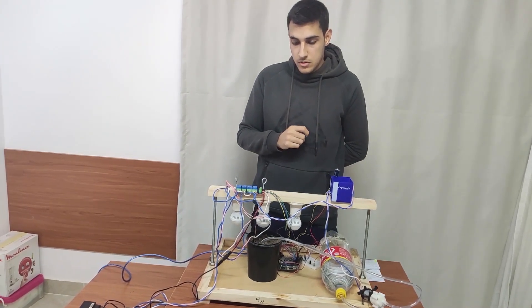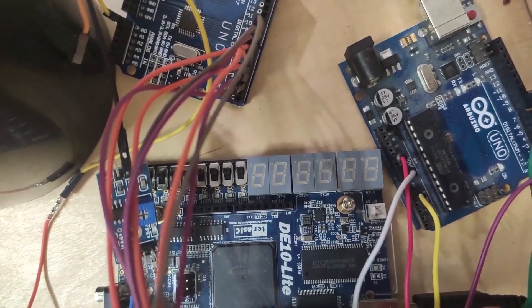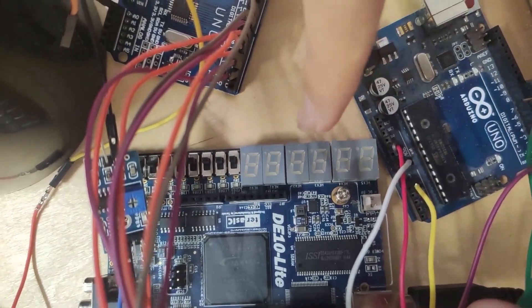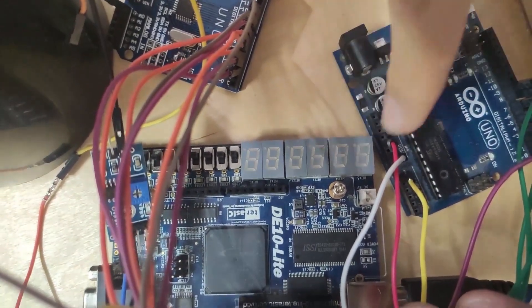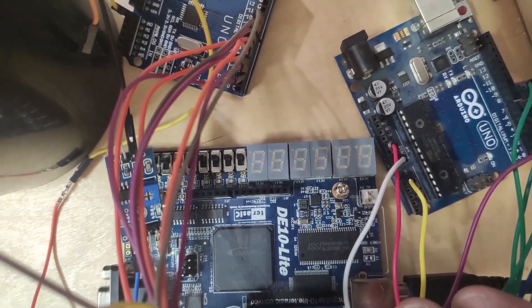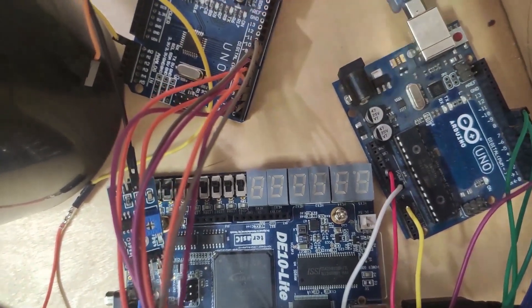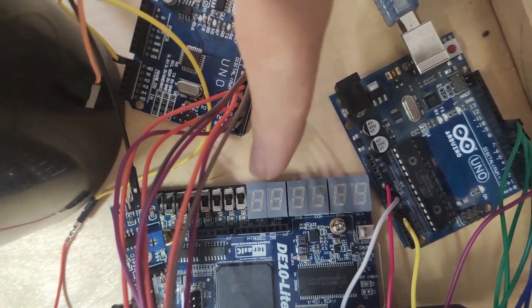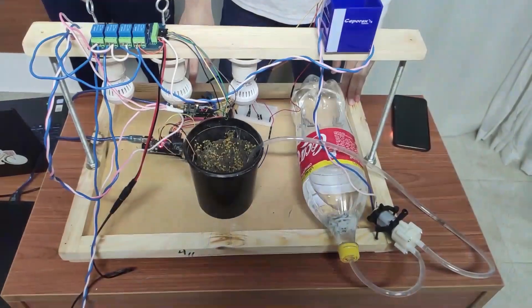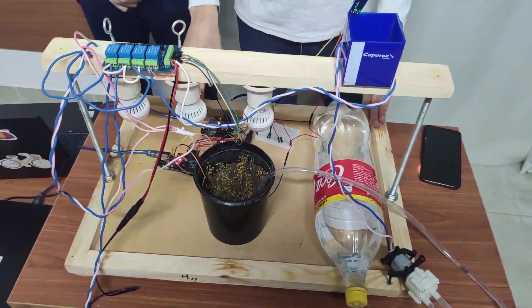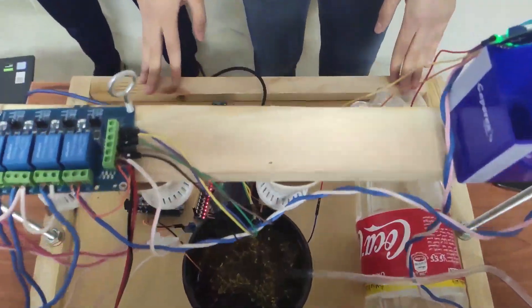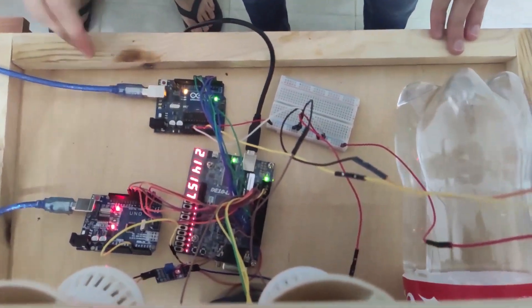The value of the sensors is shown on the seven-segment of the FPGA. The three digits on the left show the humidity sensor value, and the three on the right show the photosensor value. We will test our project. After we have connected all the components with our laptops and uploaded the code on the FPGA, we can read all the readings coming from the sensors.